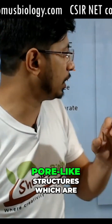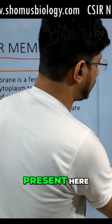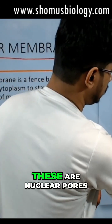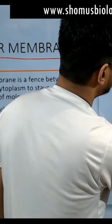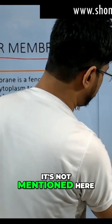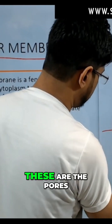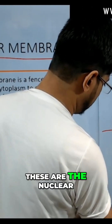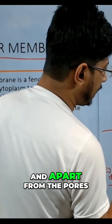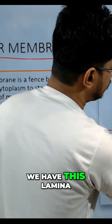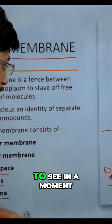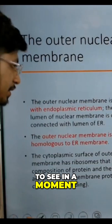Nuclear pores are small pore-like structures which are present here — you can see the nuclear pores. These are the nuclear pores that we can see. Apart from the pores, we have laminar structures known as the nuclear lamina, which we are going to see in a moment.